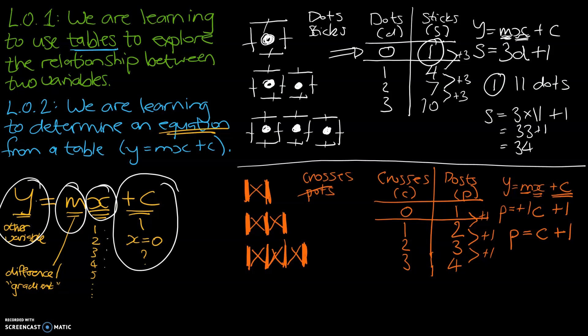We can use this formula to work out something a bit different. Last time we calculated the y value — sticks. Now let's use our algebra skills to figure out how many crosses there would be if there were 12 posts. We put 12 into our formula: 12 = c + 1. Going minus one on both sides, c equals 11. So we've used our algebra to find that 11 crosses would give a pattern with 12 posts.